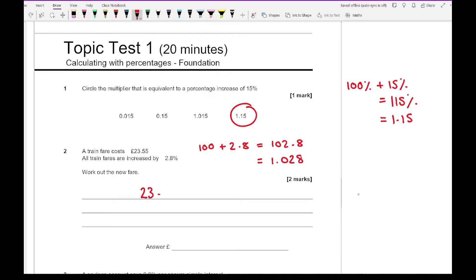To work out the new train fare I multiply the original cost which is £23.55 by 1.028. If I enter that all into my calculator I get an answer of 24.2094. With this you always want to round money questions to two decimal places. So the correct answer is £24.21.